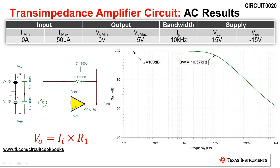Running an AC sweep analysis, we find that the bandwidth of the circuit is 10.57 kilohertz, which meets the design goal of 10 kilohertz.